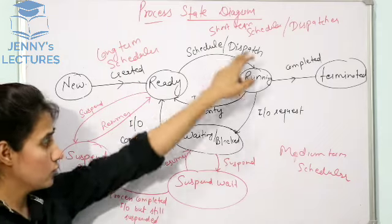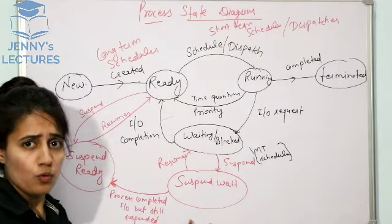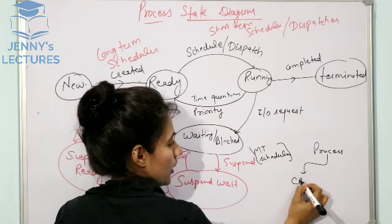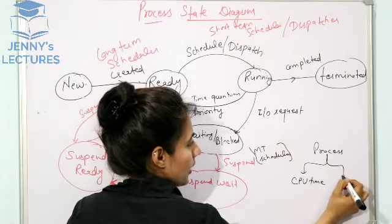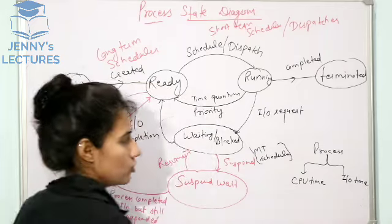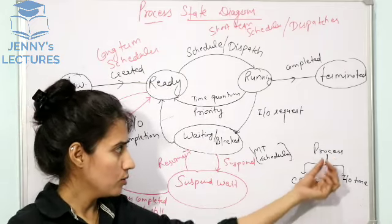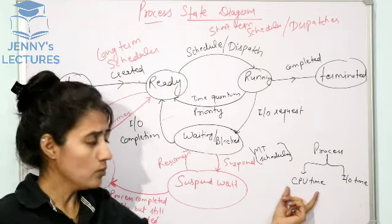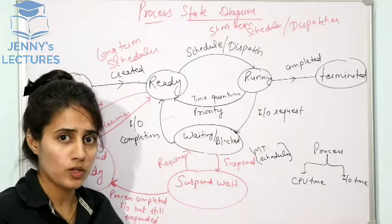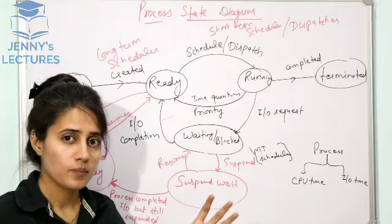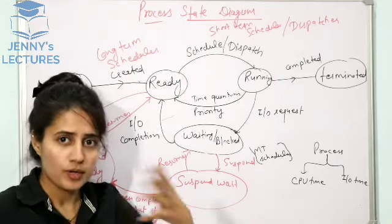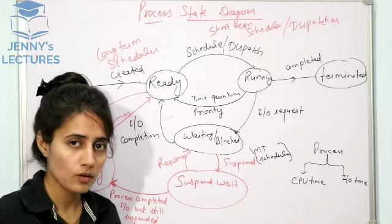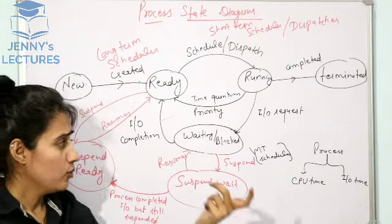When a process is running, it takes two types of time: CPU time and I/O time. CPU time is when the process is executing on the CPU; I/O time is when it is doing I/O operations. If a process spends more time in CPU processing, it is called a CPU-bound process. If it spends more time doing I/O operations, it is called an I/O-bound process.